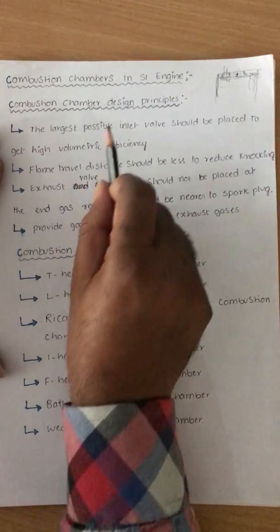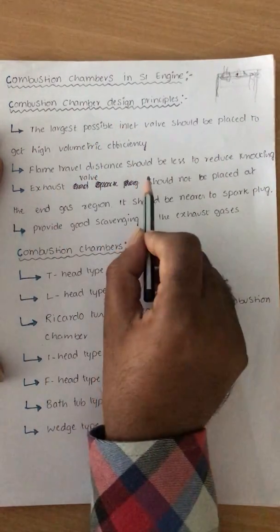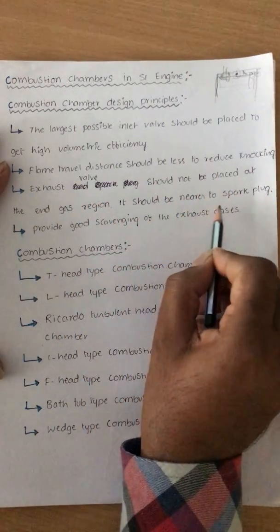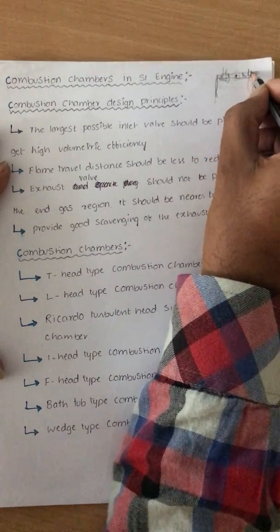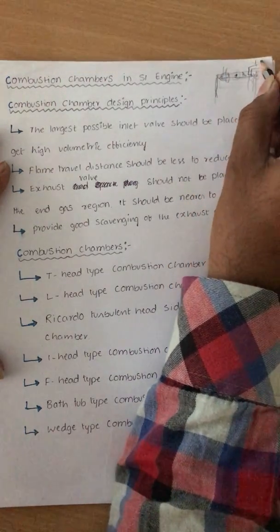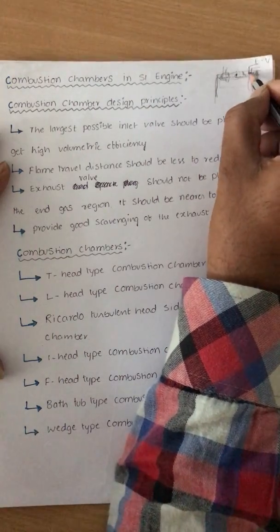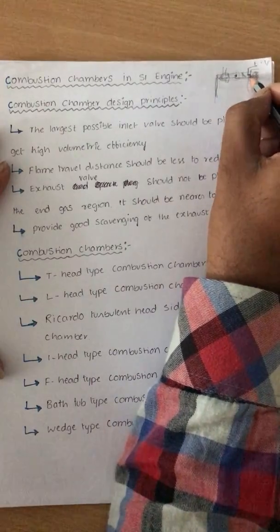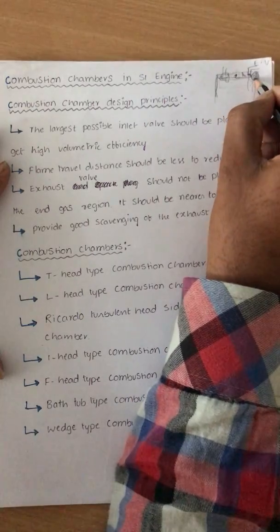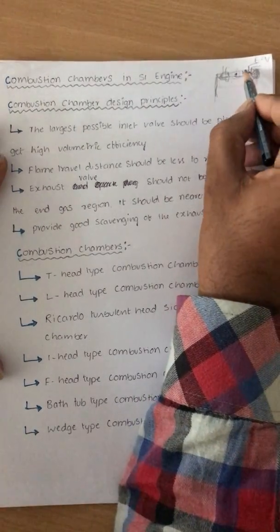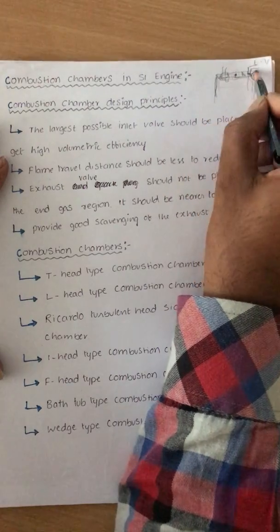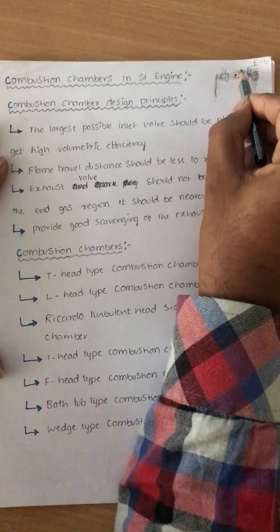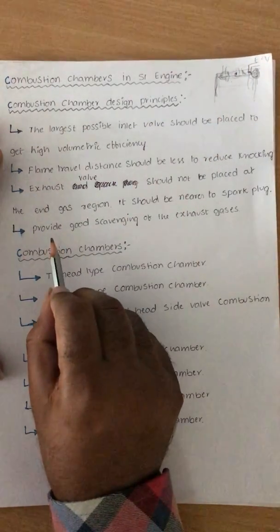So the engine cylinder should be designed such that the flame travel distance is less to reduce knocking. The third point is: the exhaust valve should not be placed at the end gas region — it should be placed near to the spark plug. Because if the exhaust valve is located nearer to the end gas region, the exhaust valve is at high temperature, and the end gas absorbs heat from it causing pre-ignition, which leads to knocking and detonation. To reduce this, the design should ensure the exhaust valve is placed near to the spark plug.